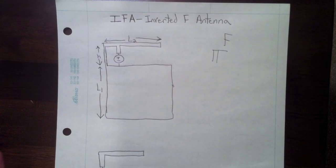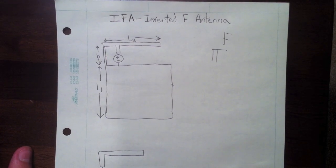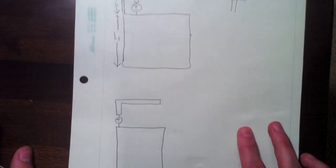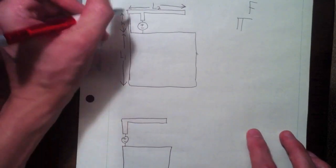So why is this thing an antenna and why does it radiate? First to understand it, let's look at the structure without this shorting arm over here.